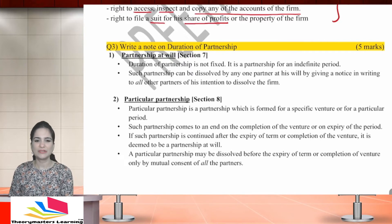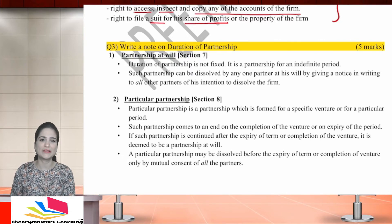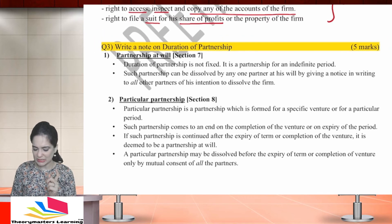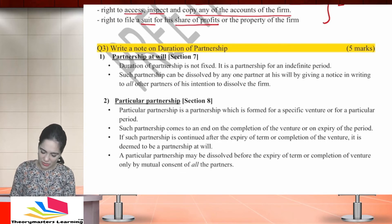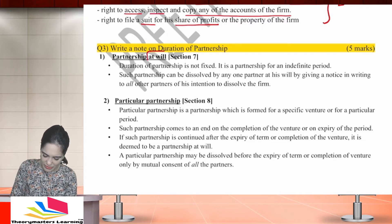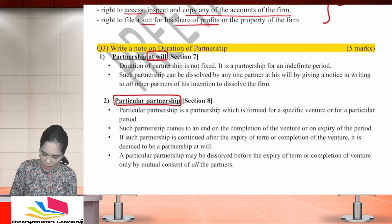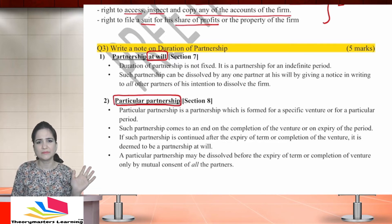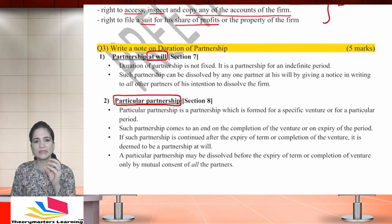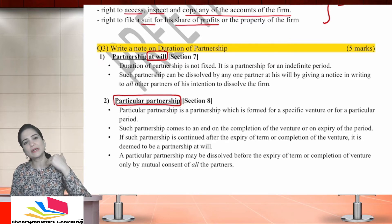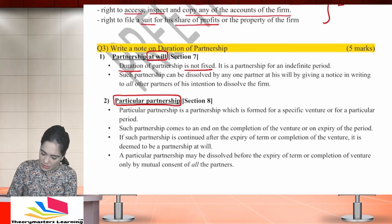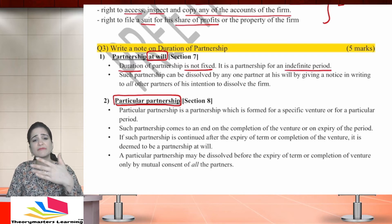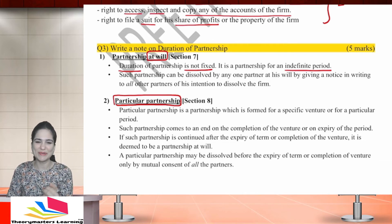The third question is a simple one: write a note on the duration of partnership. Students often confuse the two types and make small mistakes, which is why I included this question. Based on duration, partnership may be either partnership at will or particular partnership. Partnership at will means there is no fixed term — partners can retire or dissolve the firm at their own will. Duration is not fixed; this partnership is for an indefinite period till it is dissolved.